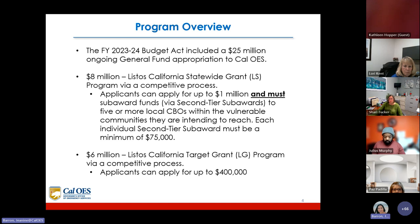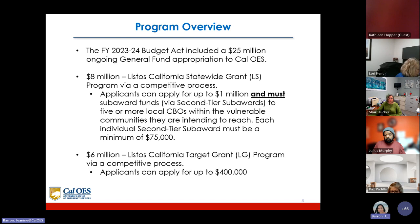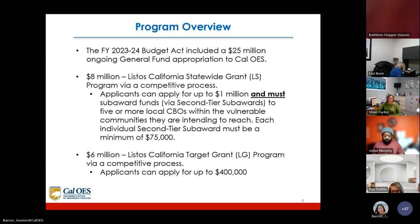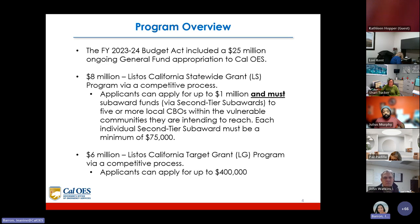Each individual second-tier subaward must be a minimum of $75,000. This is a very important piece to understand if you are applying for the statewide grant. Additionally, $6 million is available for the Listos California Target Grant LG Program via a competitive process, and applicants can apply for up to $400,000.